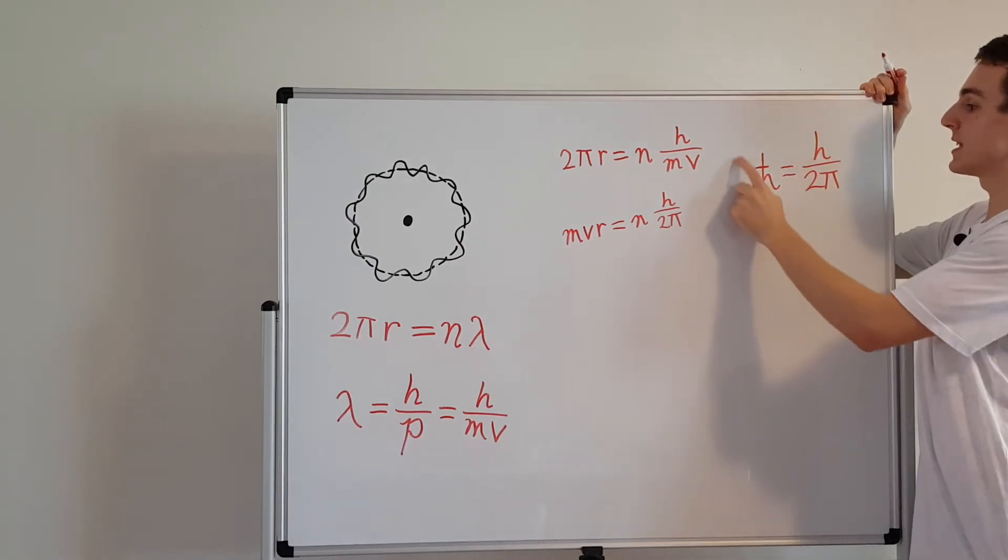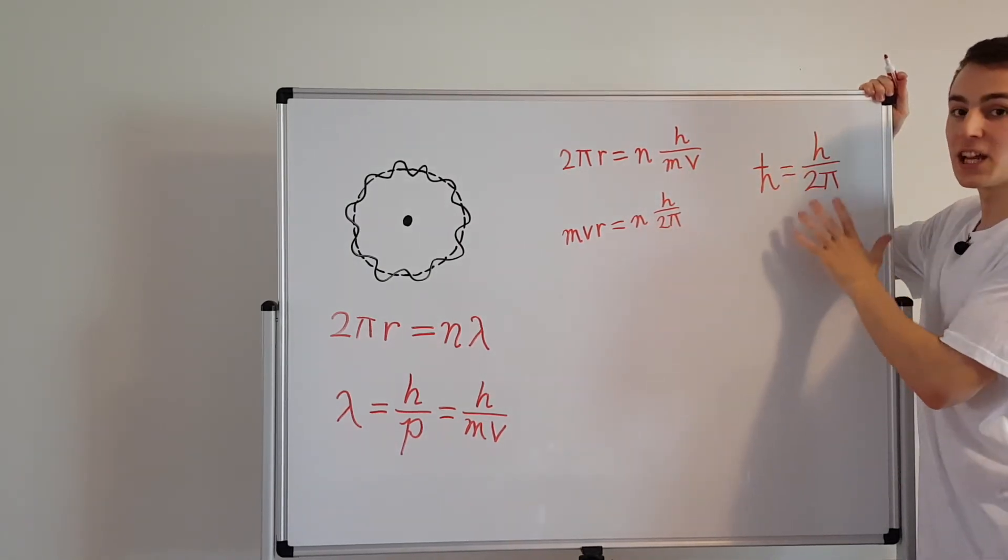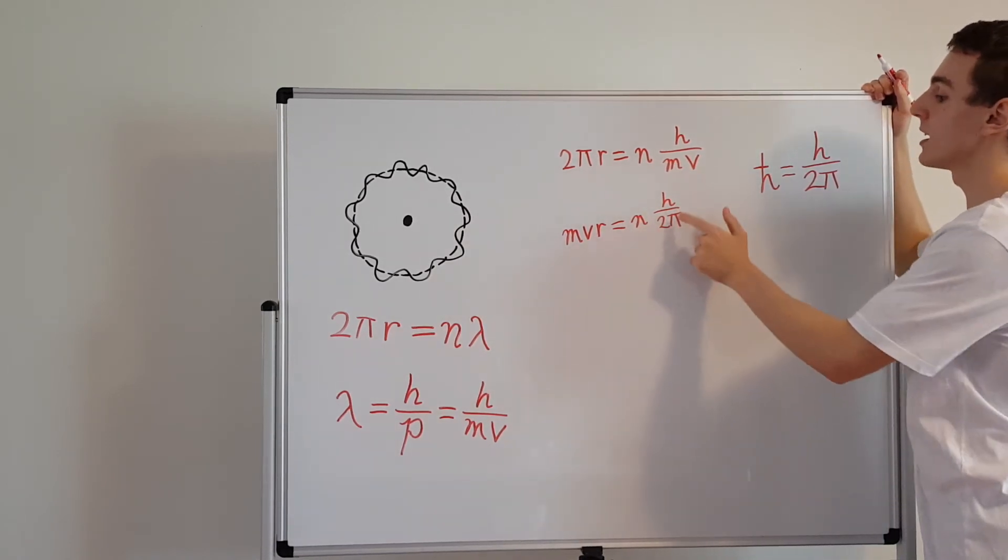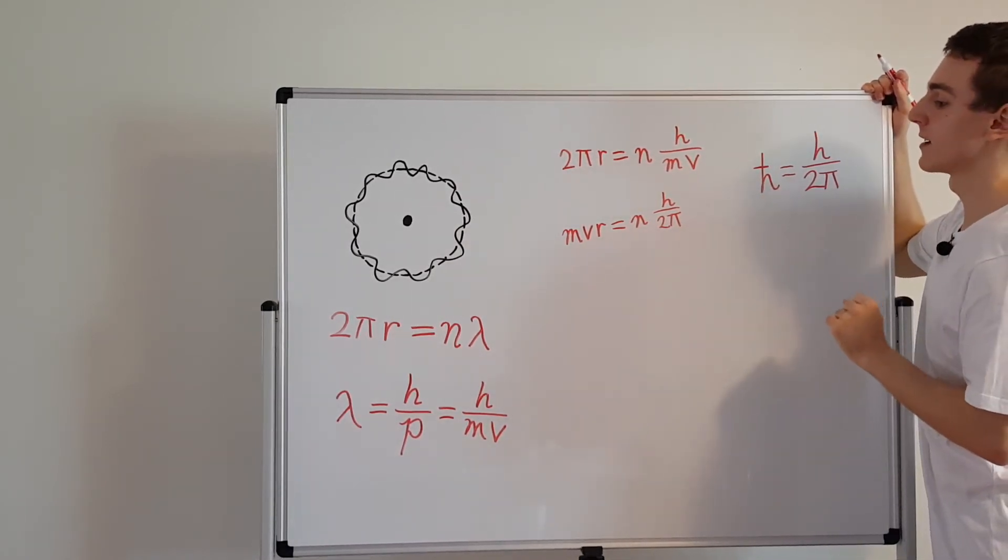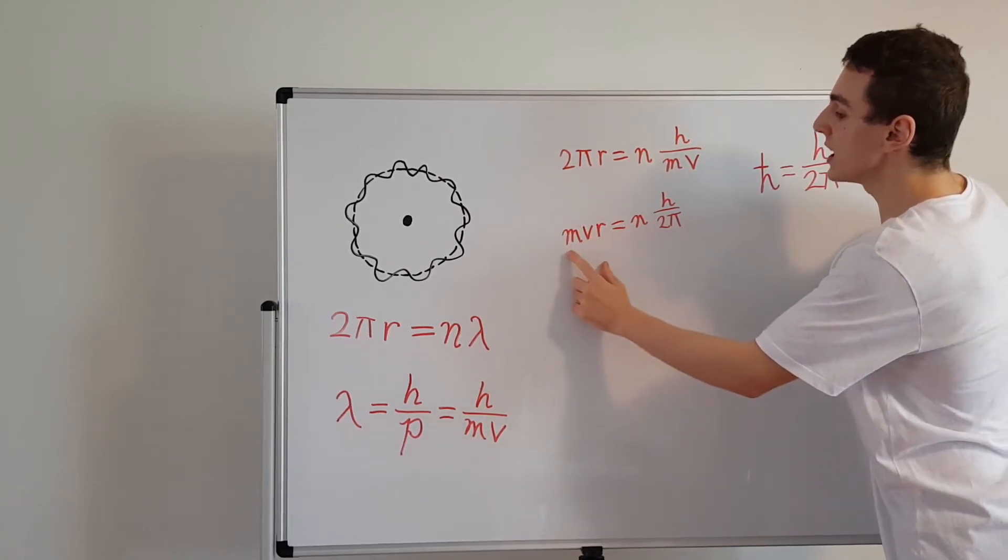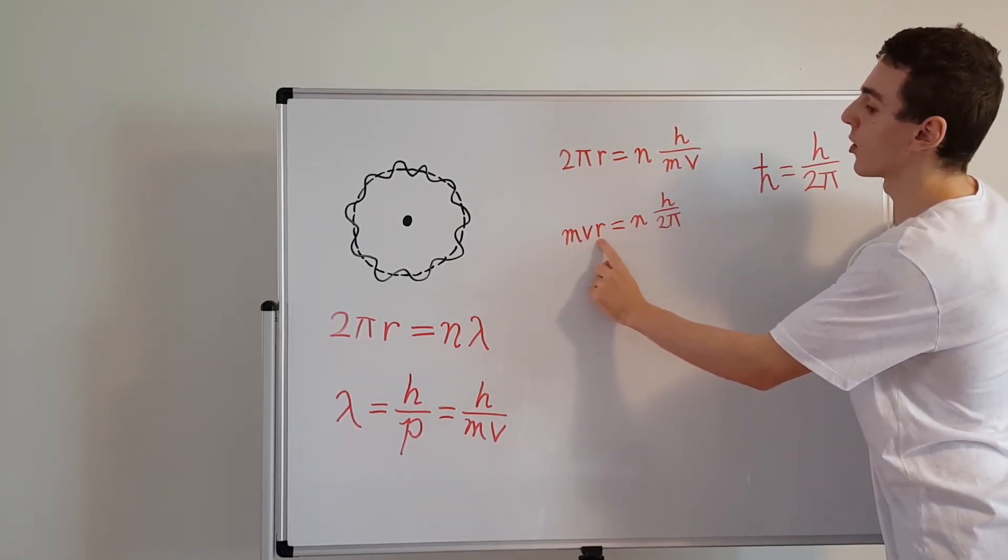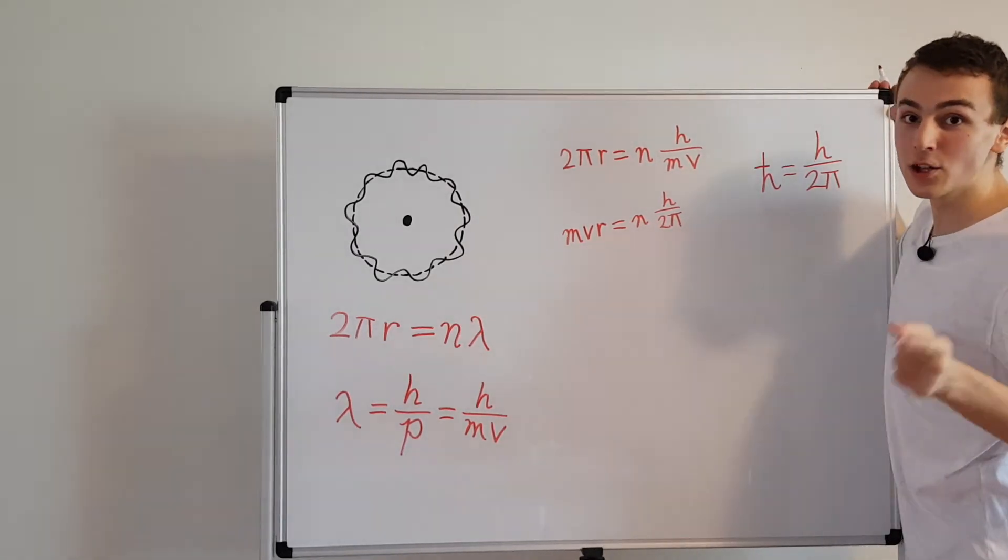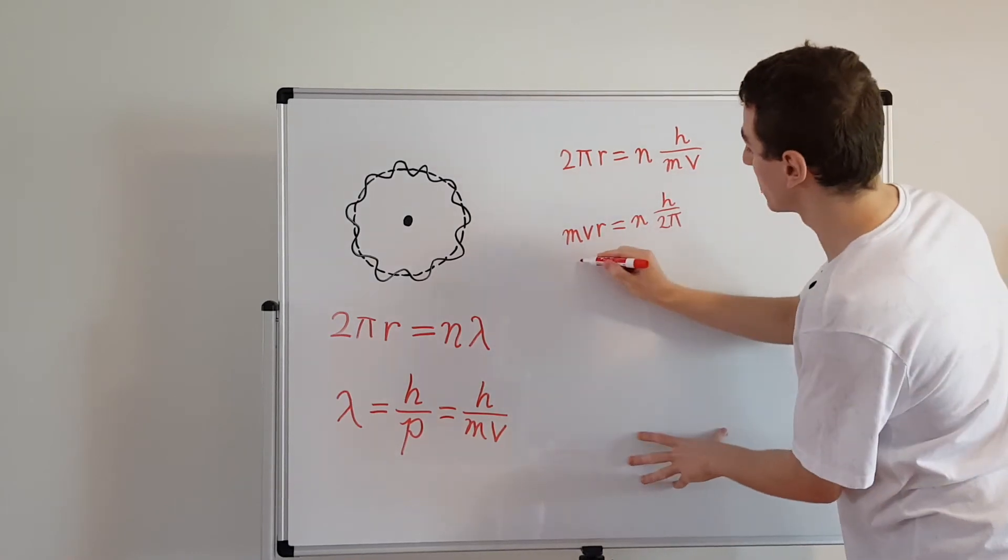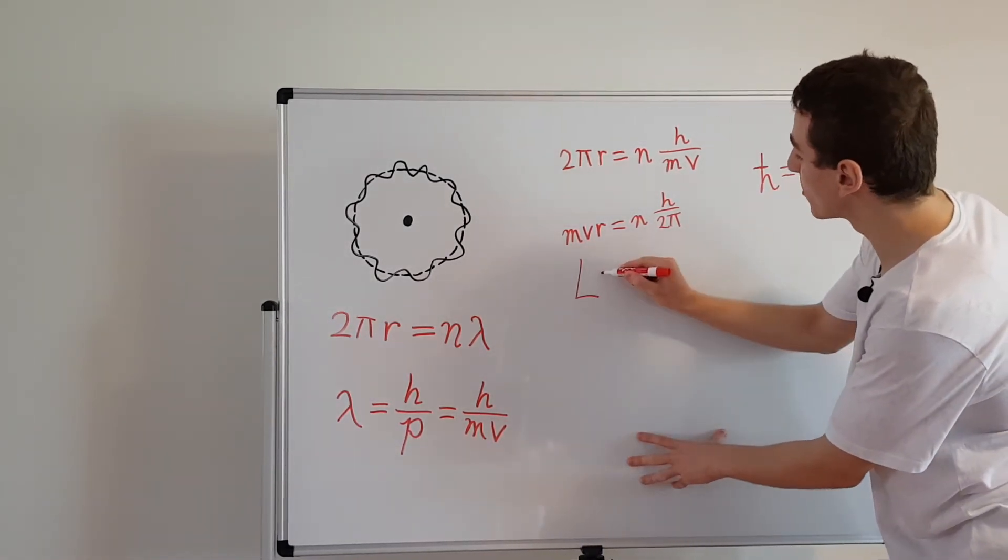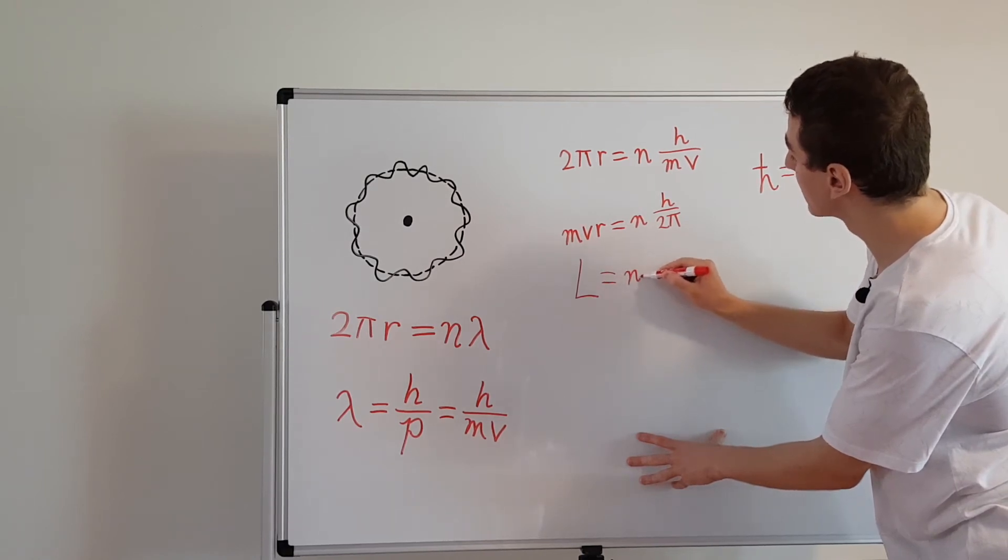h over 2 pi, you can just think of when you see this little expression over here, h bar, that's just h over 2 pi. So what we can actually do is we can write this as n times h bar. And we're going to do that in a second. But now let's have a look at what is on the left-hand side of this equation. On the left-hand side, we have mv r. Now in classical mechanics, this actually corresponds to the angular momentum, which is capital L. Sometimes it's written as lowercase l as well.